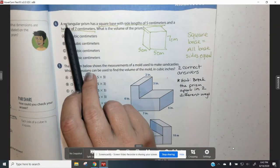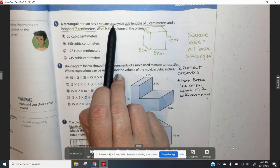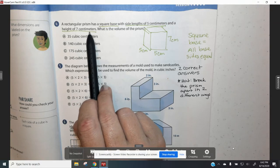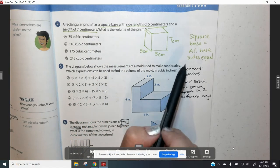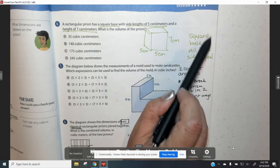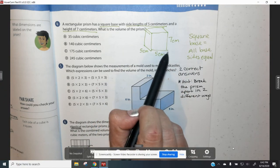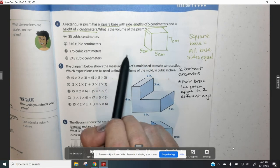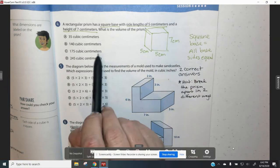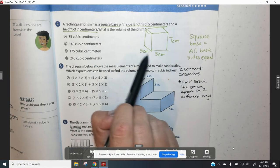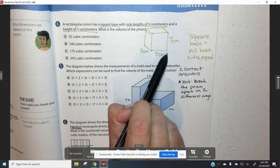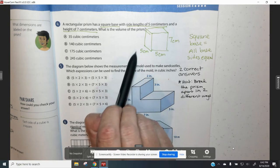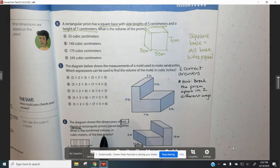For number four, we're looking at a rectangular prism that has a square base with side lengths of five centimeters and a height of seven centimeters. What is the volume of this prism? When we're talking about a rectangular prism that has a square base, that means that all the sides on the base (there's four sides) are all equal because it's a square, and we know that all squares have four equal sides. So you need to figure out the volume. Since it's a square base, these two sides are going to be the same. So five times five is the base, and then that number times seven is going to give you the volume.